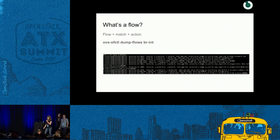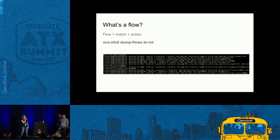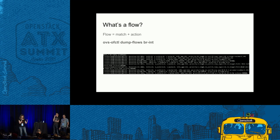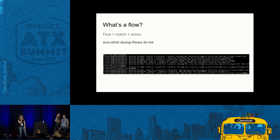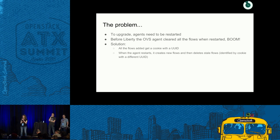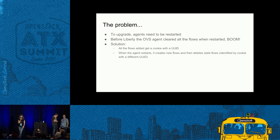A flow was introduced by the OpenFlow protocol. It's made of two parts: a match and an action. A match is basically a filter — it identifies some fields in a packet and the value they need to have. If a packet matches, you apply the action, which could be a drop or output from a specific port. An example of a flow is dropping all TCP traffic. Before Liberty, restarting the L2 agent caused traffic disruption because the agent was deleting all the flows at startup. You needed an interval of time where the agent was processing ports and installing new flows during which there was no traffic.